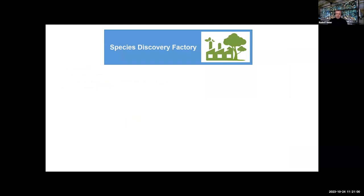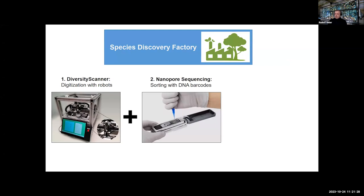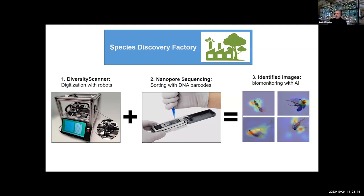If you have a scaling problem, you may need something like a factory. That's why we call this the building of a species discovery factory, and it consists of three parts. The first part is a robot capable of finding specimens in a sample, taking images of individual specimens, and moving them into a microplate. Once you have an image and a DNA barcode, you can assign images to putative species and develop AI identification algorithms, which in the future allows you to sort out common species and focus on rare ones in taxonomic pursuits.